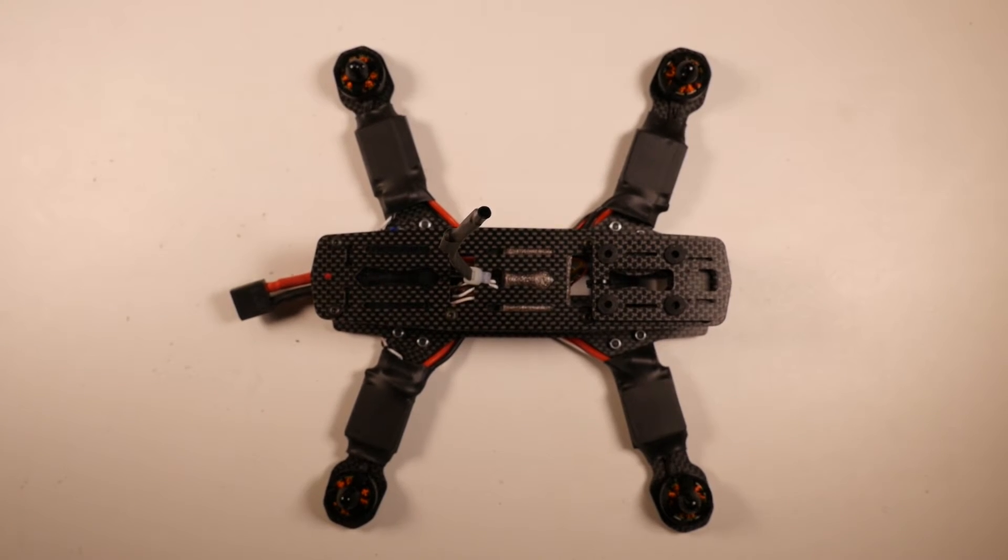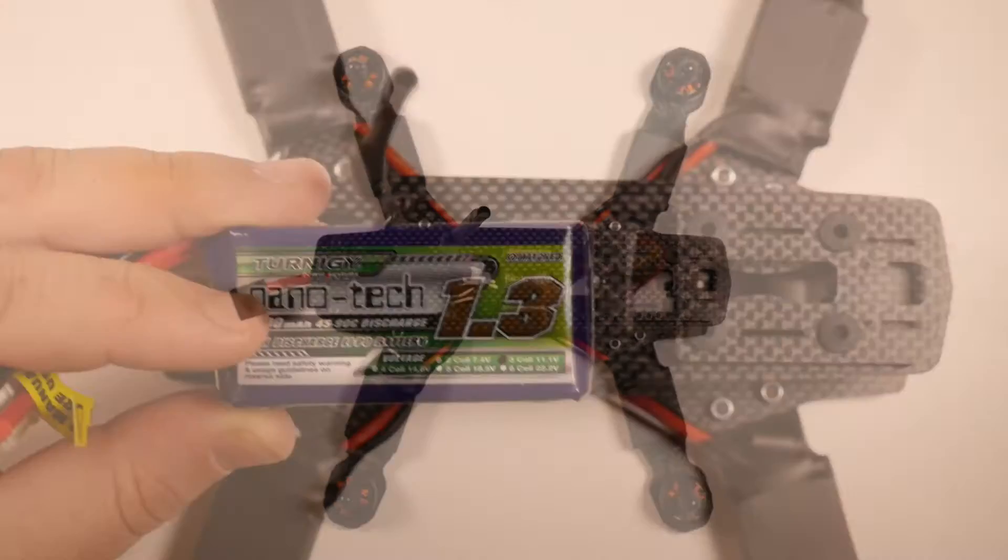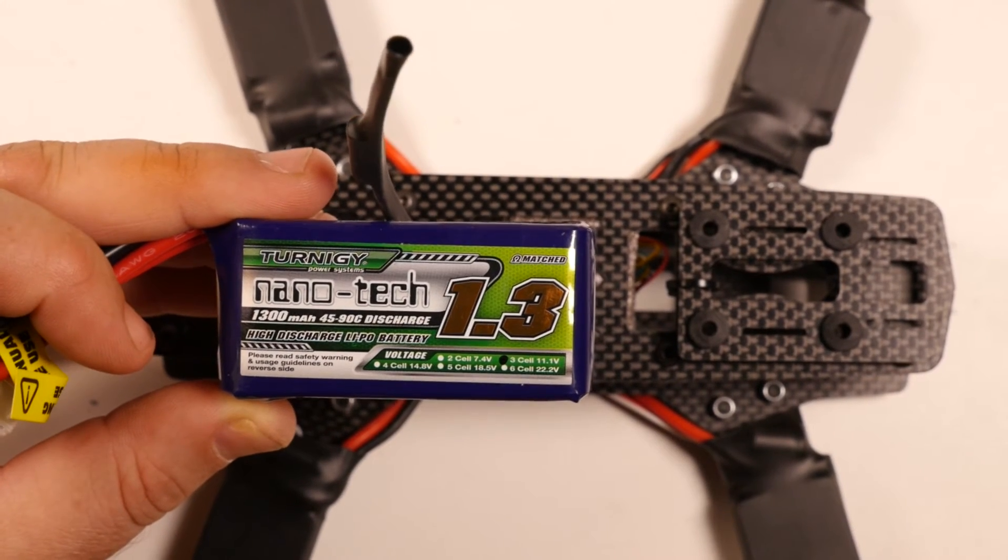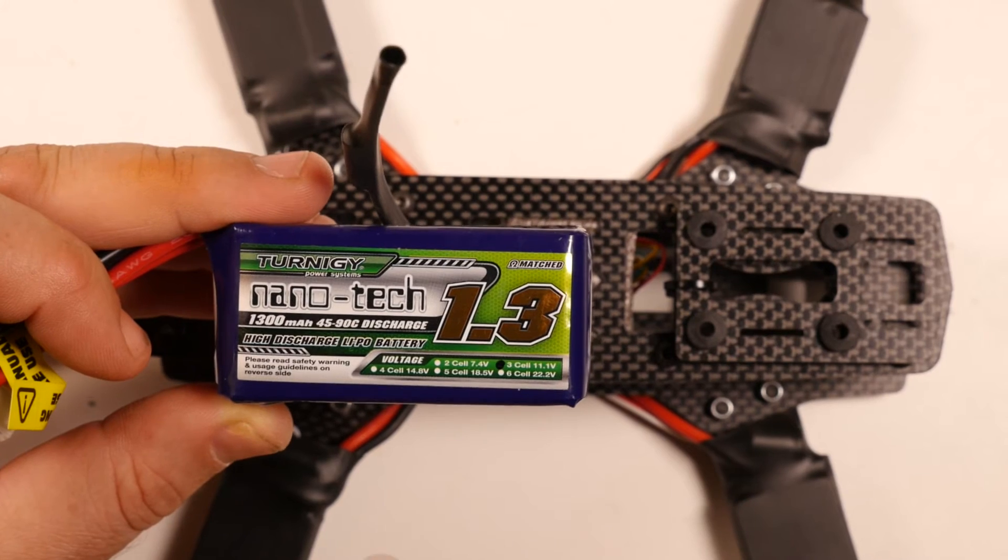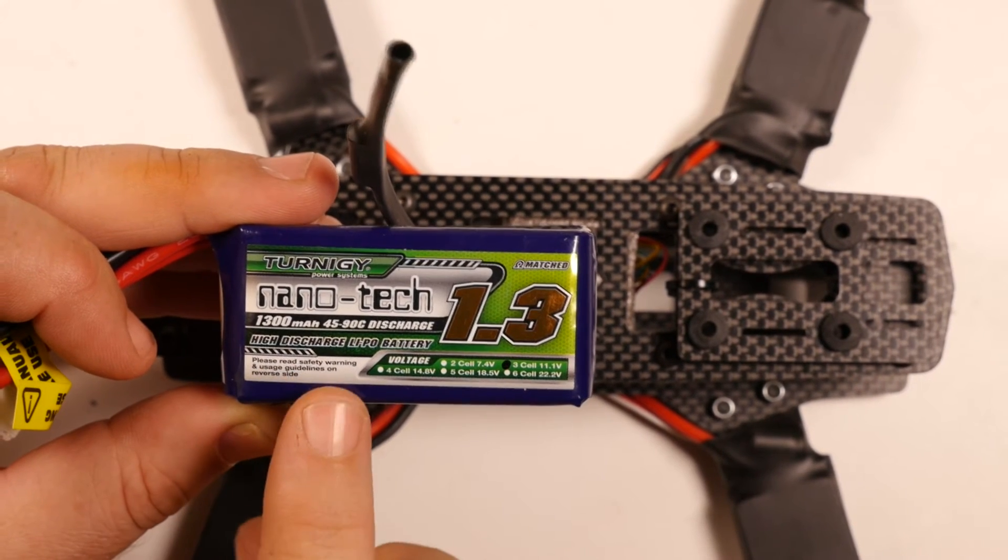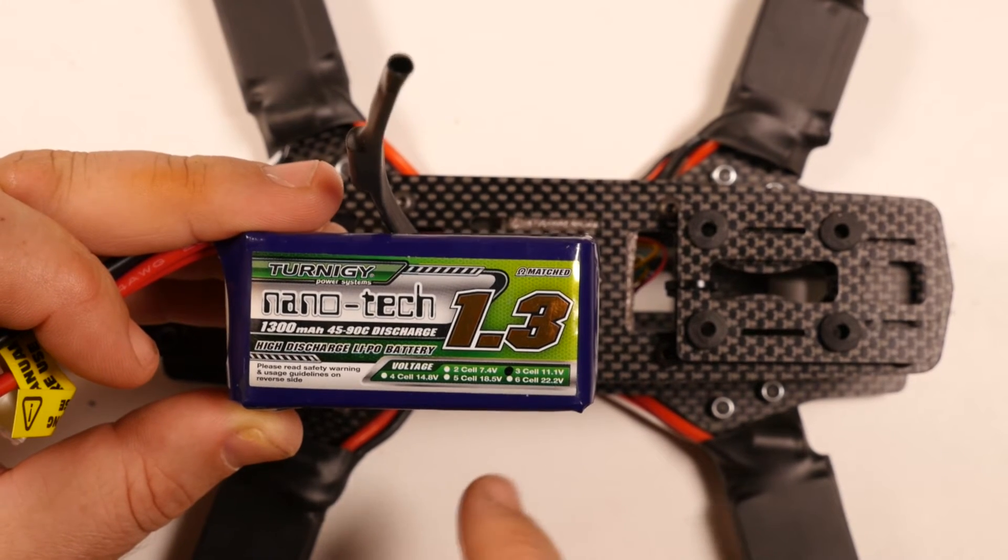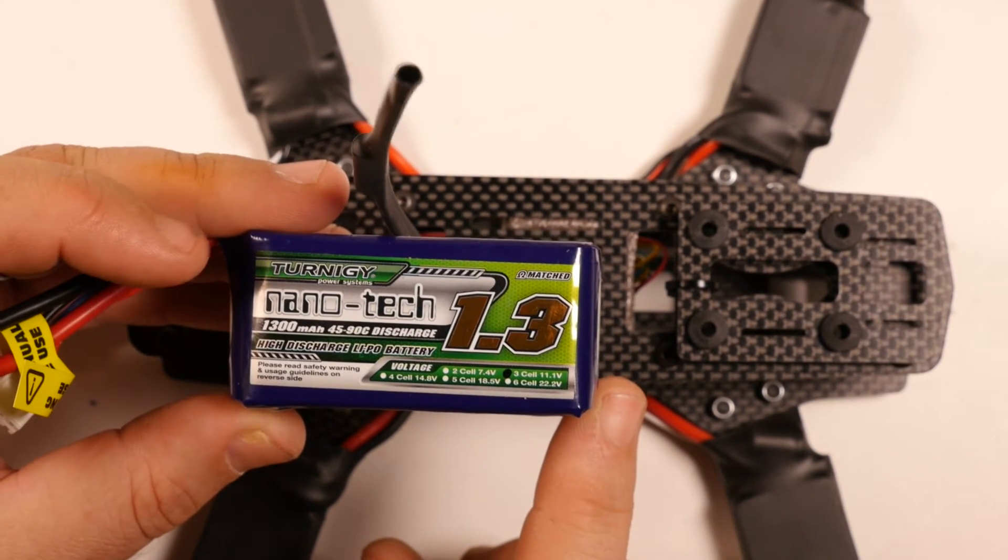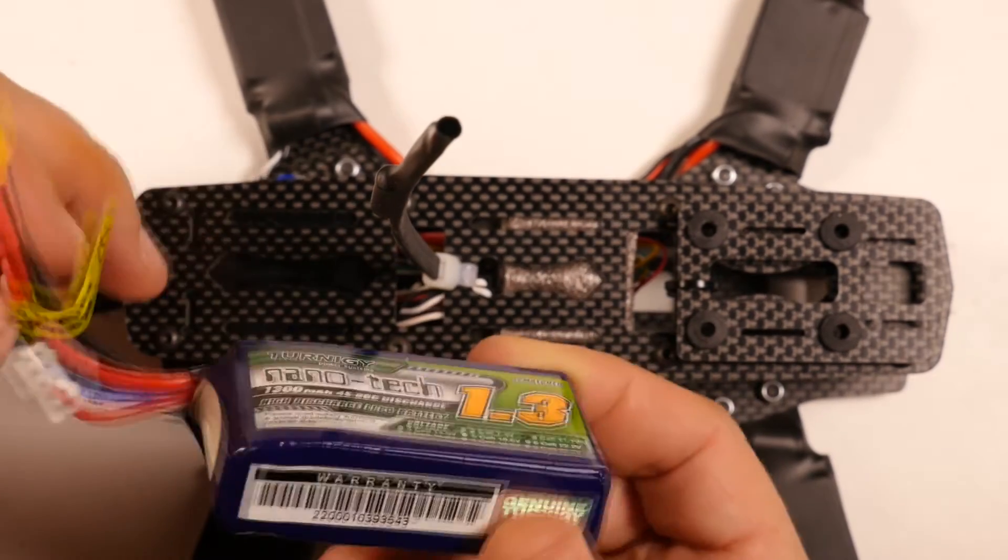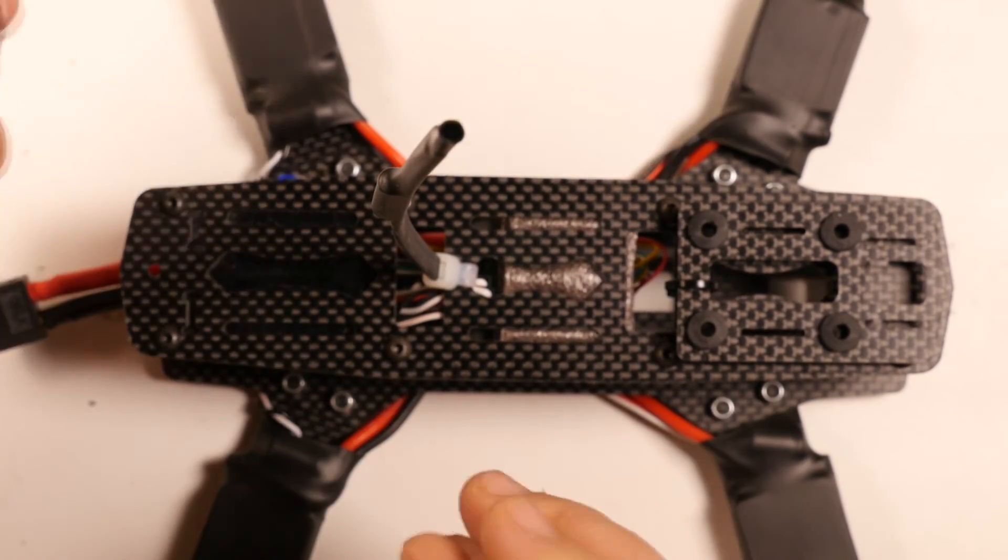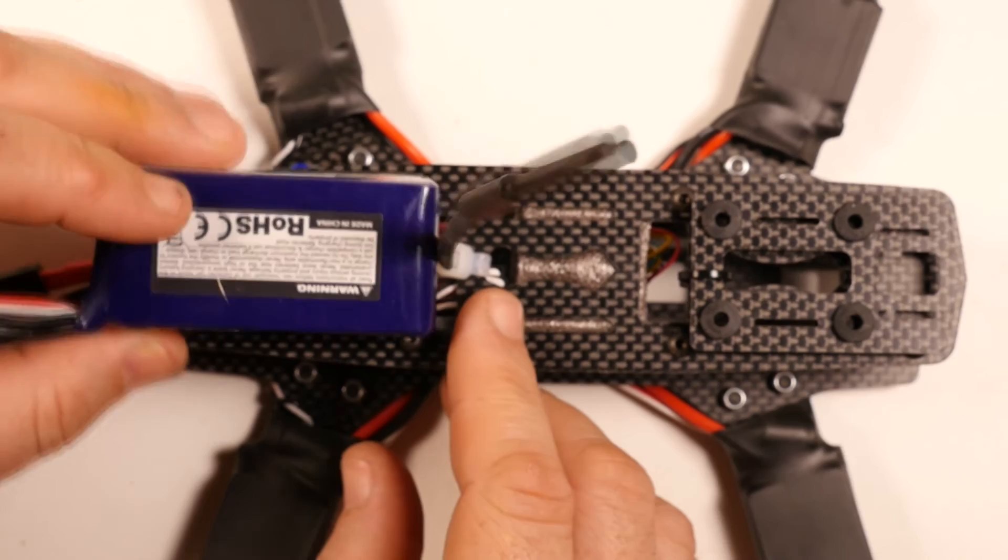So now we're at the point where we need to install the battery. The battery that I've chosen for this build is the Turnigy Nanotech 1300 milliamp hour, 45 to 90C discharge. That's capable of delivering more than enough power, it's nice and light, and it's going to fit on our quad with no issue.